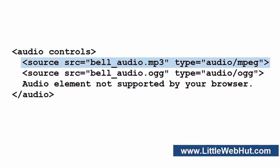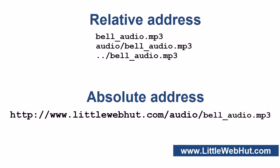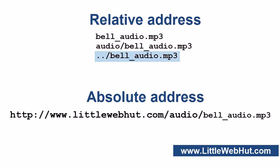Let's take a look at the source element. The source element does not have an end tag. The audio file URL is specified by using the source attribute, where you can use a relative or an absolute address. Here are some examples of relative addresses: one can be used if the audio file is in the same directory as the HTML document, another if the audio file is in a subdirectory, and another if it is located one level up.